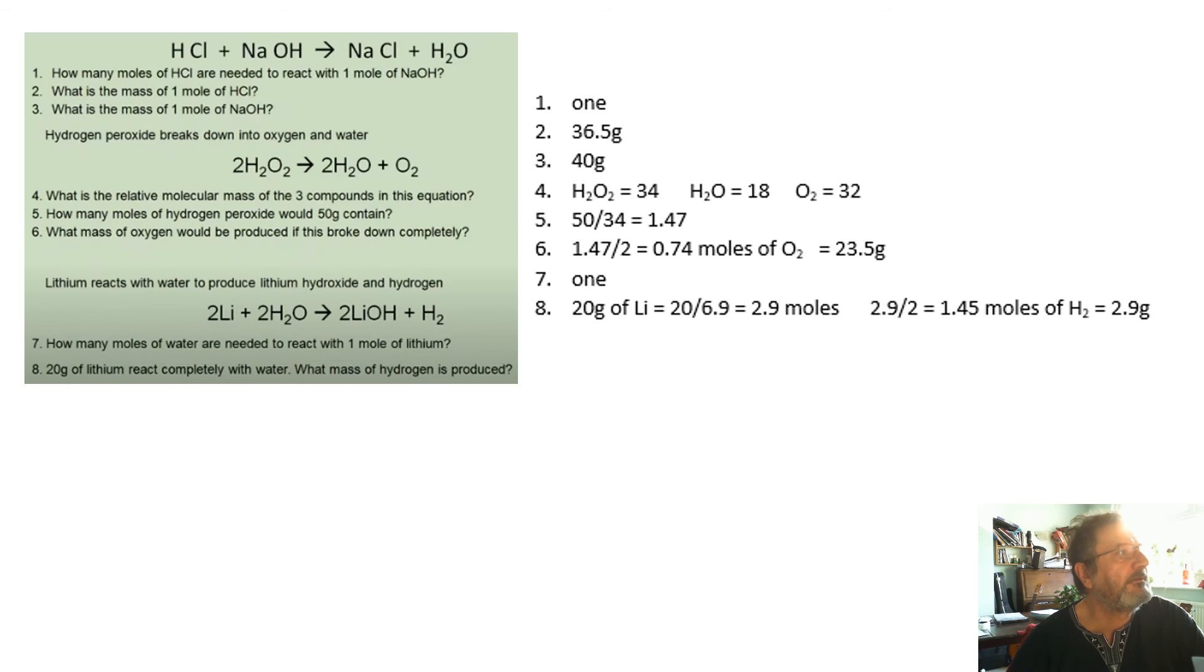How many moles of hydrogen peroxide would 50 grams contain? That's just using the triangle. So it'd be 50 divided by 34. What mass of oxygen would be produced? Well, we know how many moles we're going to get, and so we can work out the mass, if you know the mass of a mole.